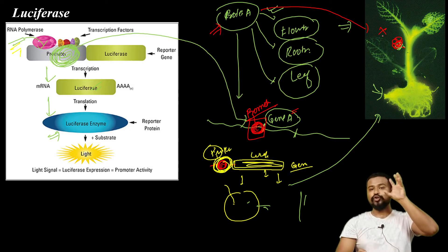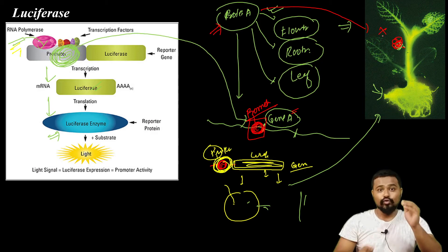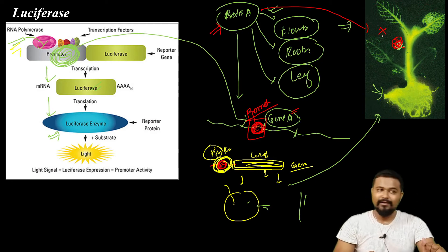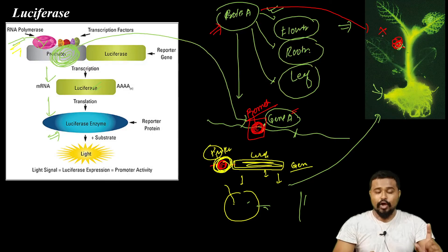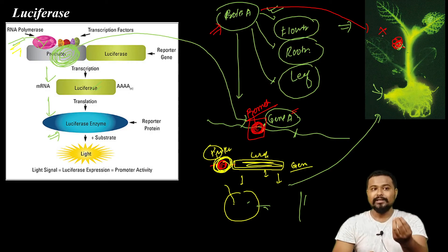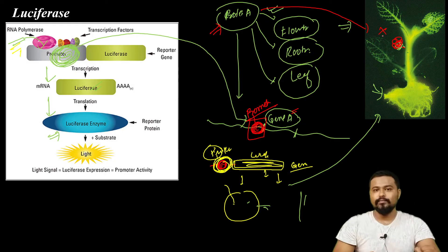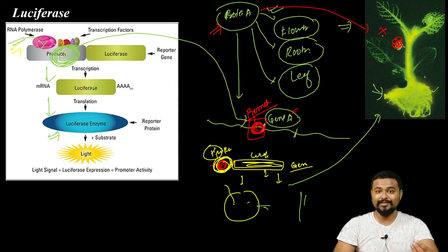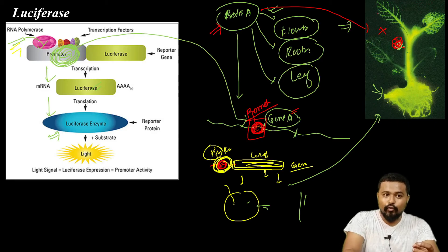Leaf expression of Protein A is also present. This is the same principle as a reporter gene — the intensity of light indicates the level of expression. The quantity of protein expressed corresponds to the amount of light emitted.